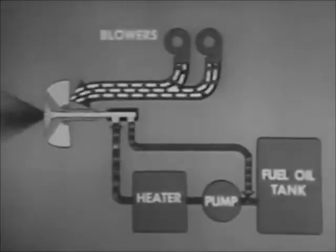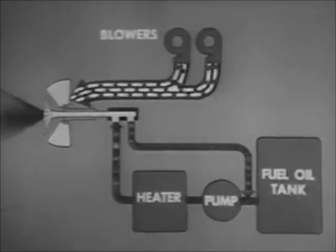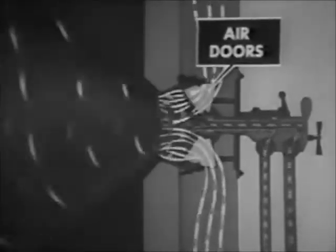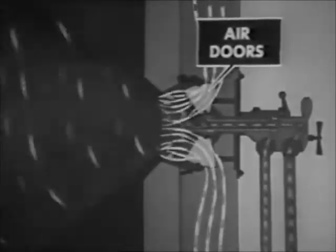Varying the speed and number of the forced draft blowers is the principal method of controlling the burner air supply. You can make limited adjustments to the air supply with the air doors.